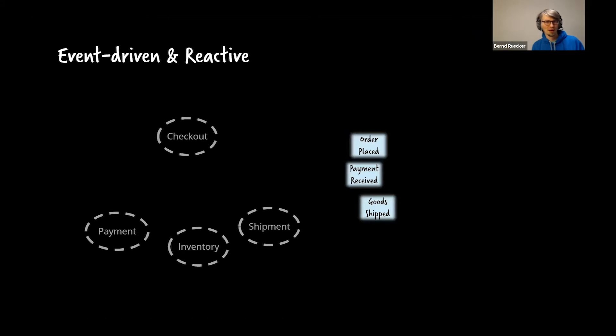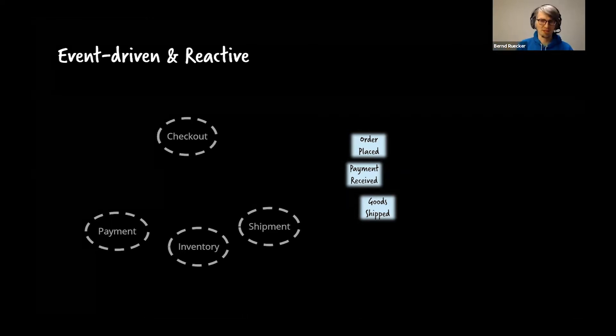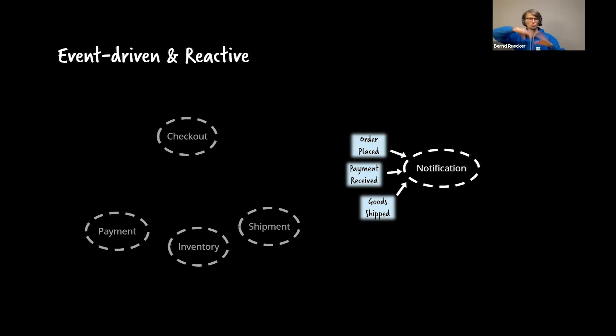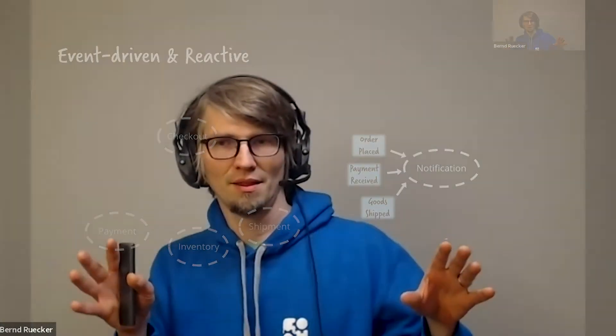You probably have a payment microservice to collect money, inventory to keep inventory, and shipments to ship stuff to customers. If you assume you have these four microservices, you probably want them to be reactive and event-driven. Event-driven architecture is a hype at the moment, so all of these microservices might emit events — like 'somebody ordered something,' 'somebody paid,' 'we shipped your order.'